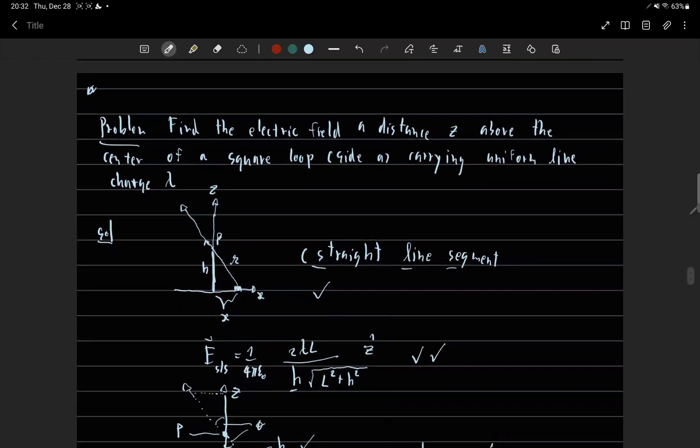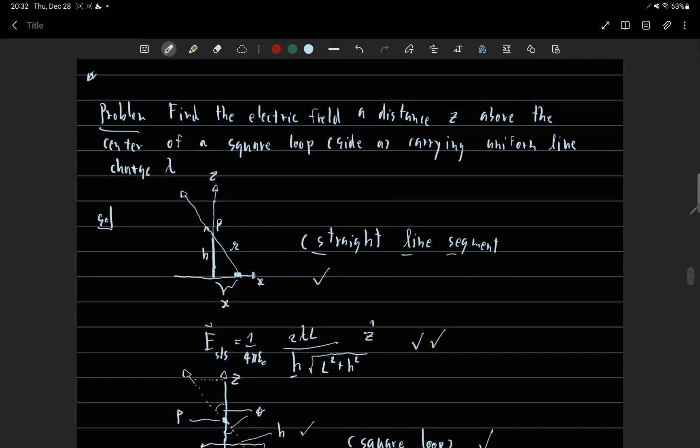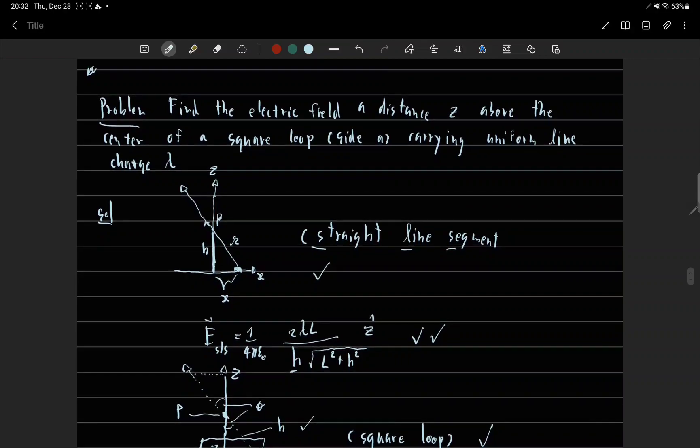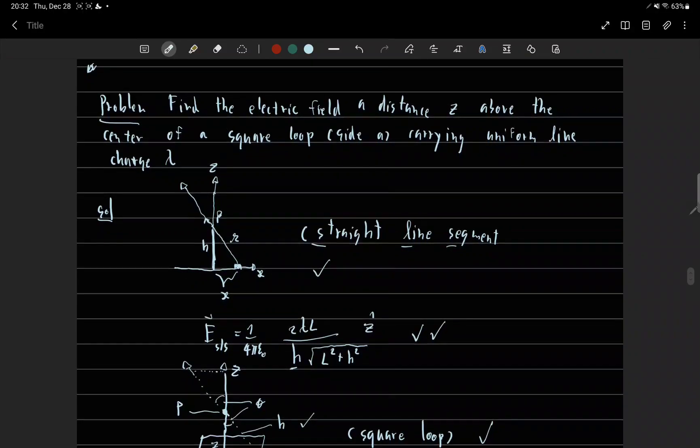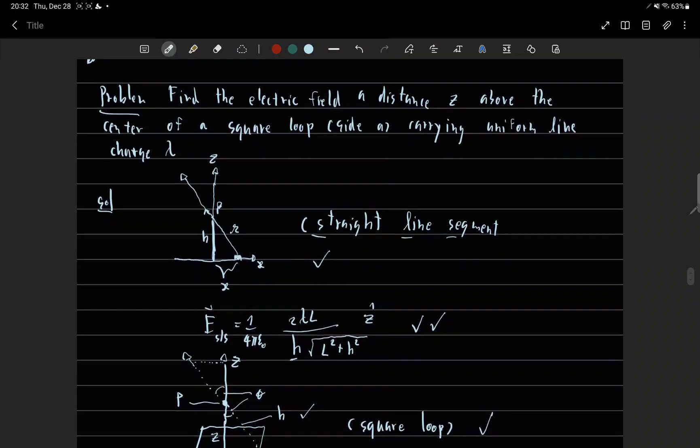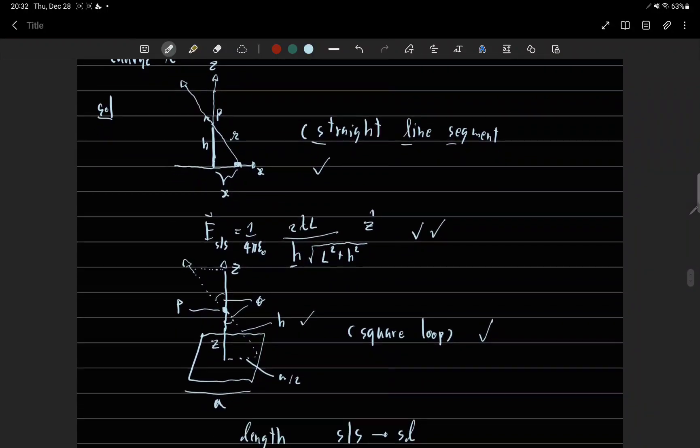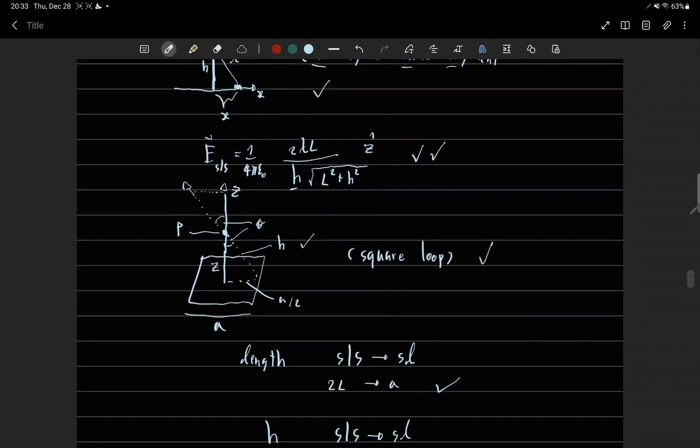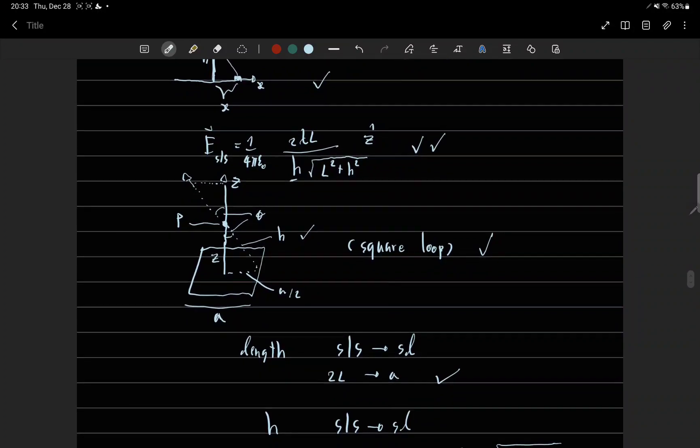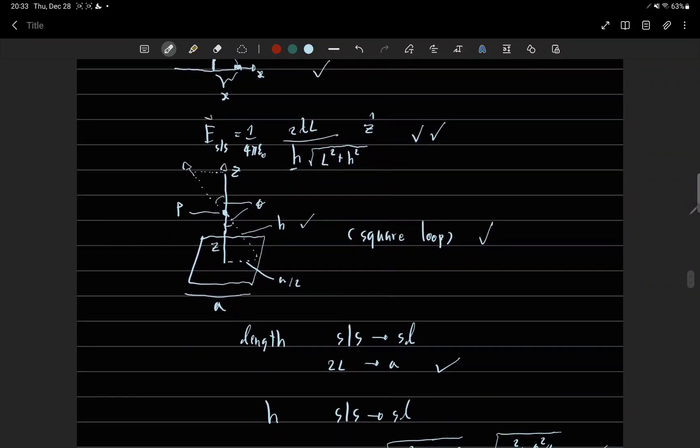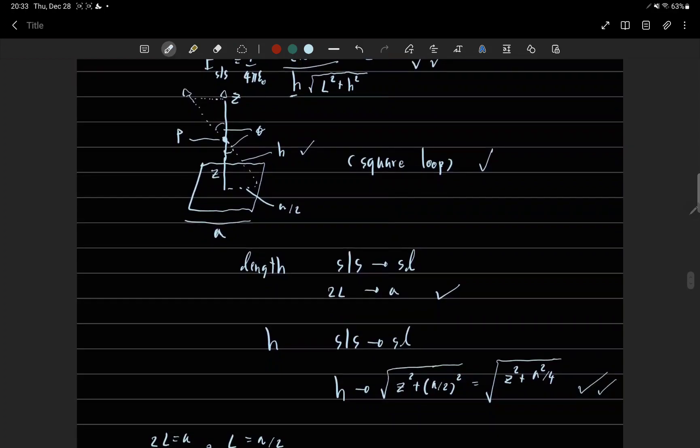So we have to use electric field from straight line segment and change it to square loop by changing range to L to A and H, change H.